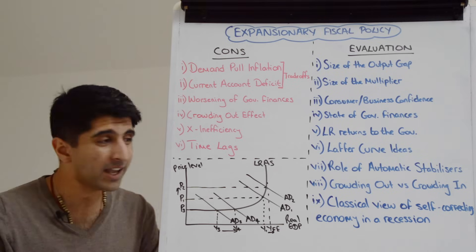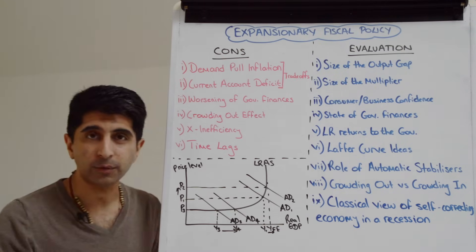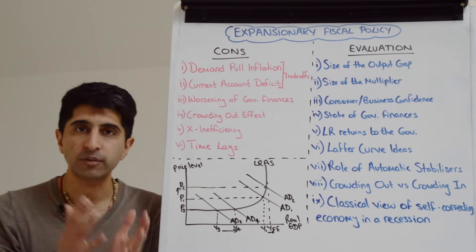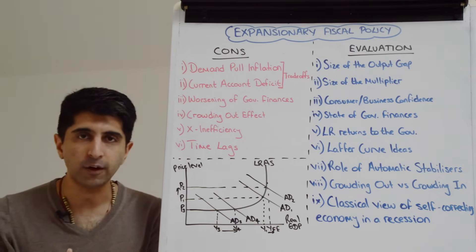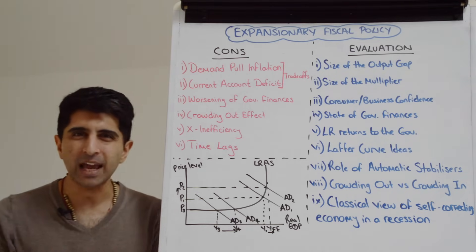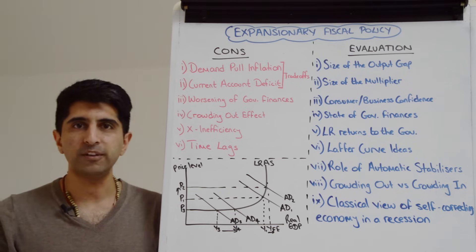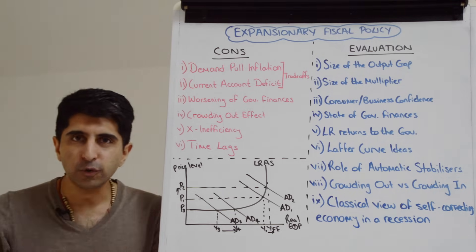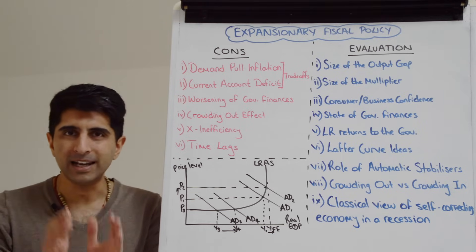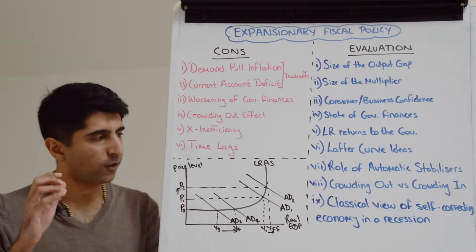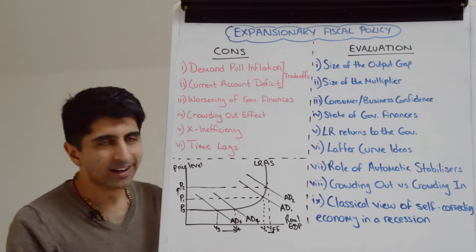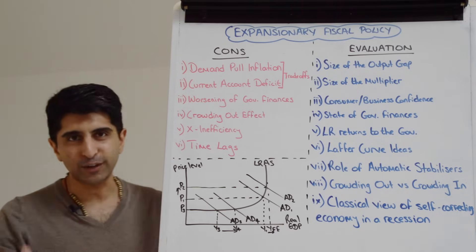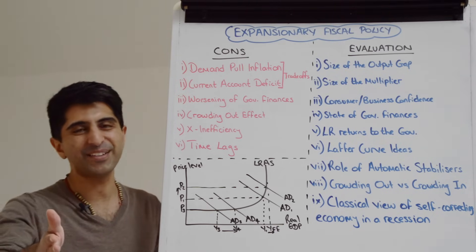The classical view is that expansionary fiscal policy in a recession is not necessary at all. The economy will self-heal: wages will fall and the economy will return to full employment on its own. Therefore, debt-fueled expansionary fiscal policy that burdens future generations is unnecessary — leave the economy alone and it will self-correct. That covers everything on the other side of the coin of expansionary fiscal policy.